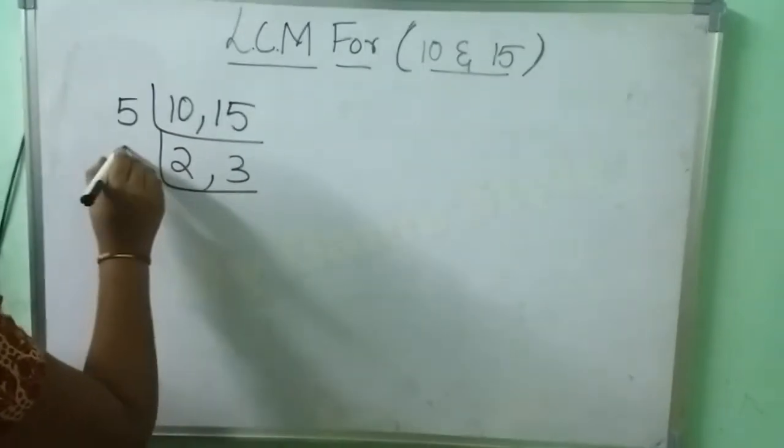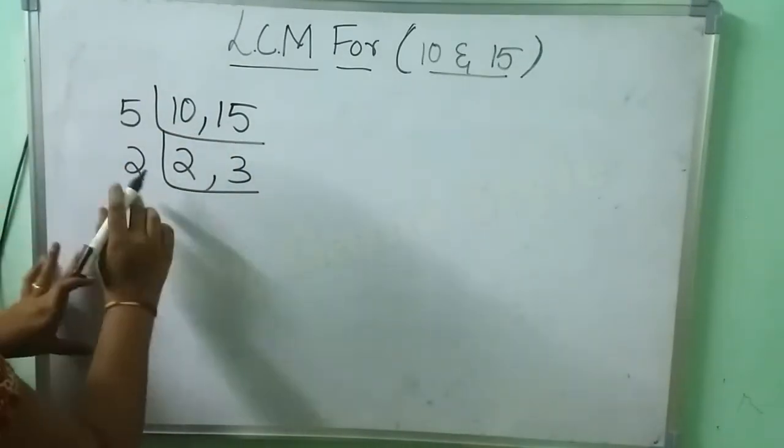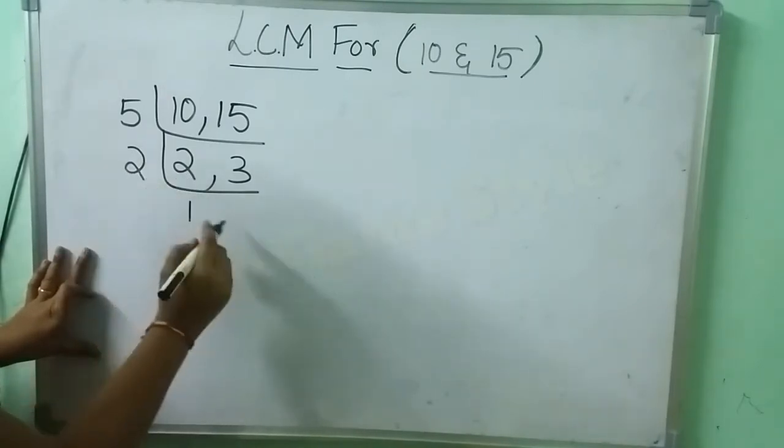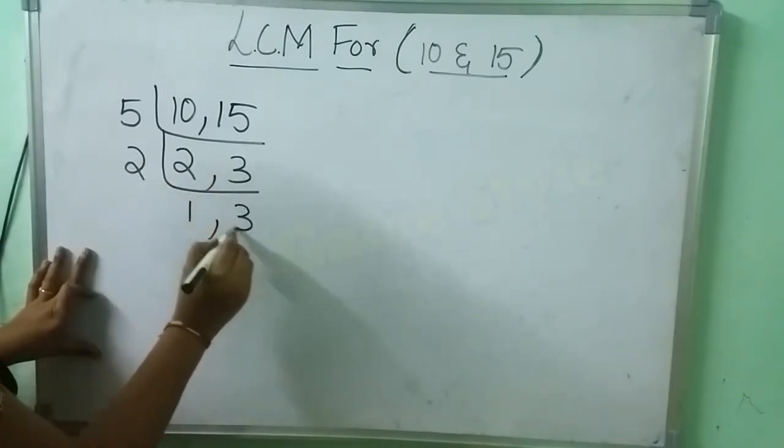Then again I am taking 2 here. 2 1's are 2. 2 1's are 2, comma this 3 as it is.